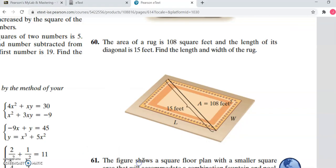Okay, let's see here. We are going to do this number 60. We have the area of a rug is 108 square feet and the length of its diagonal is 15 feet. Find the length and the width of the rug.